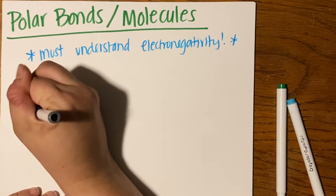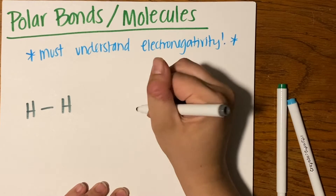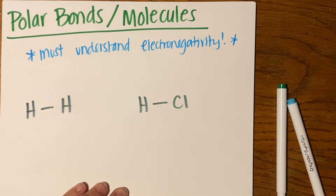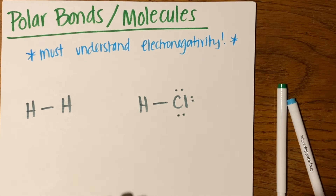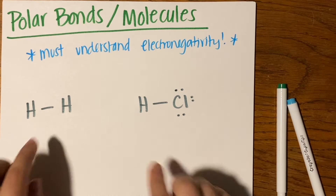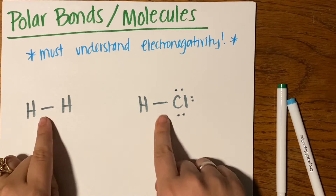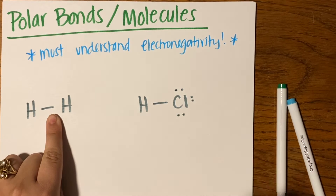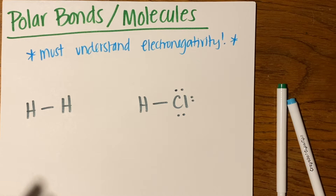If I had a hydrogen bonded to another hydrogen versus a hydrogen bonded to a chlorine - showing lone pairs to indicate chlorine has a full valent shell - these are both covalent bonds. We have non-metals bonded to other non-metals. However, the electrons that are shared between these covalent bonds are actually not shared equally, and that's because we have a polar bond and a non-polar bond here.